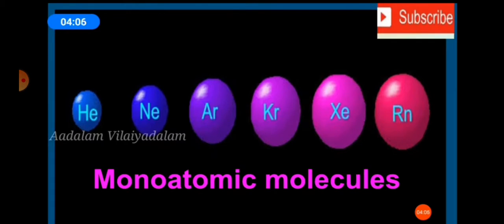Now let us see examples. Monoatomic molecules: a molecule which contains only one atom is called a monoatomic molecule. Inert gases like helium, neon, argon, krypton, xenon, and radon are examples. These atoms do not combine with any other atoms, so they are monoatomic molecules.